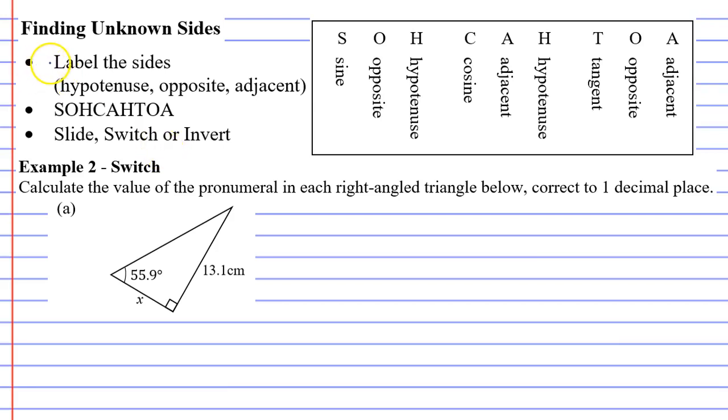So starting with step one, we're going to label the sides. Opposite our right angle is hypotenuse. Opposite our marked angle is opposite. And our x here is adjacent to the marked angle.